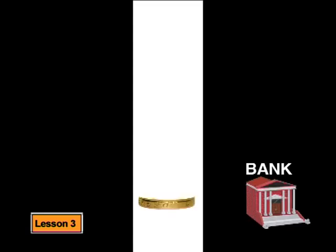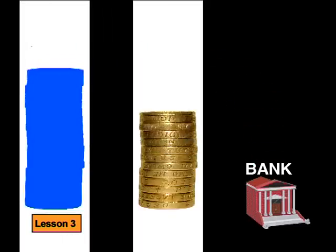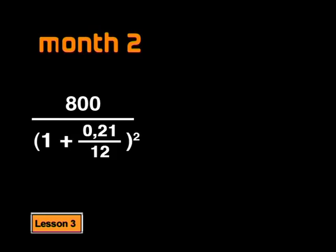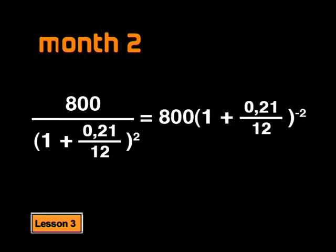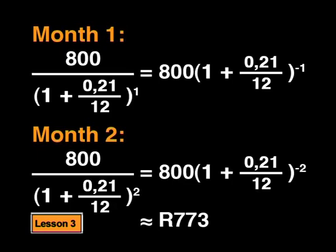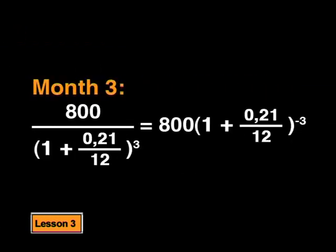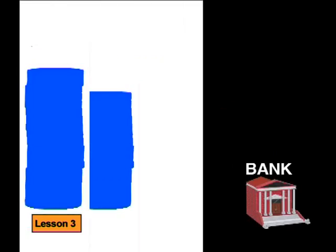So what will happen to the second 800 rand I pay in? The 800 rand you pay in two months is worth even less now. The 800 rand is divided by the interest term squared, which we can write as a negative exponent - the present value decreases to 773 rand. The total amount that can be borrowed can be found by adding them all together, just like we did for the future value annuity. Can you predict the present value of the third month's repayment? The value of the third repayment will be 800 × (1 + 0.21/12) to the power of minus 3. As you continue paying off the loan, the present value of your monthly repayment decreases each month.